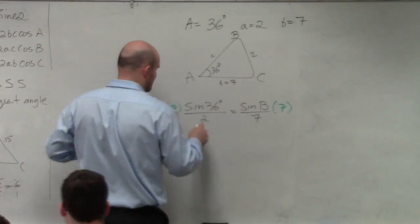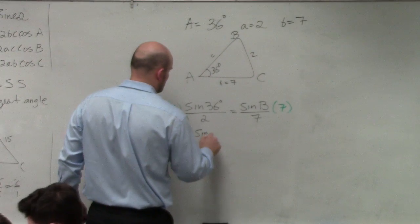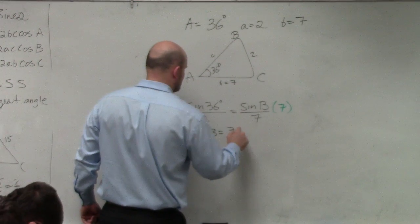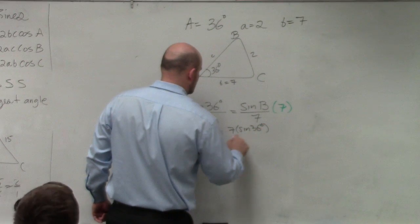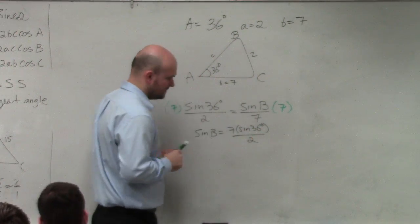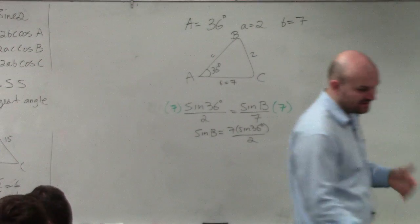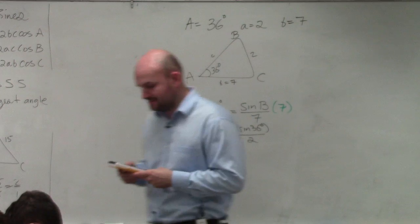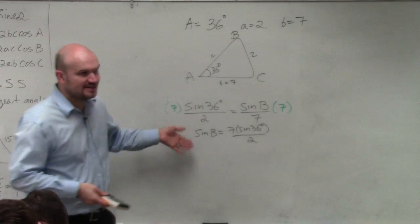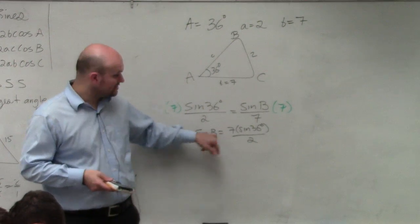So I can say the sine of B is equal to 7 times the sine of 36 degrees all over 2. Now, that is what the sine of B is equal to. The sine of B. So we don't want to solve for the sine of B. We need to solve for B.